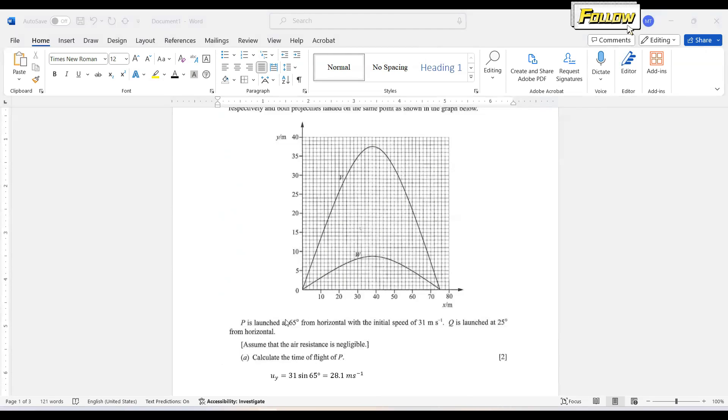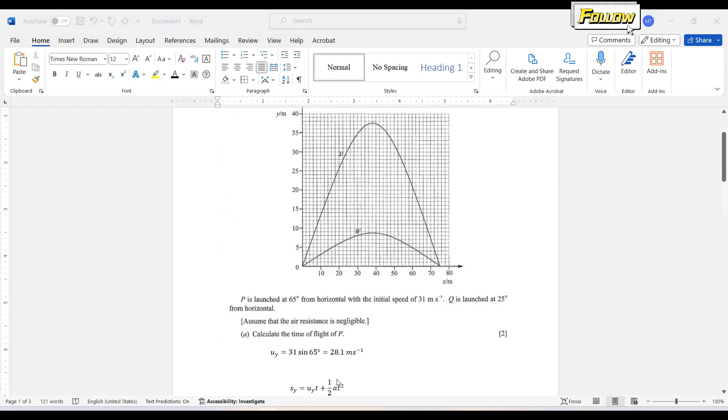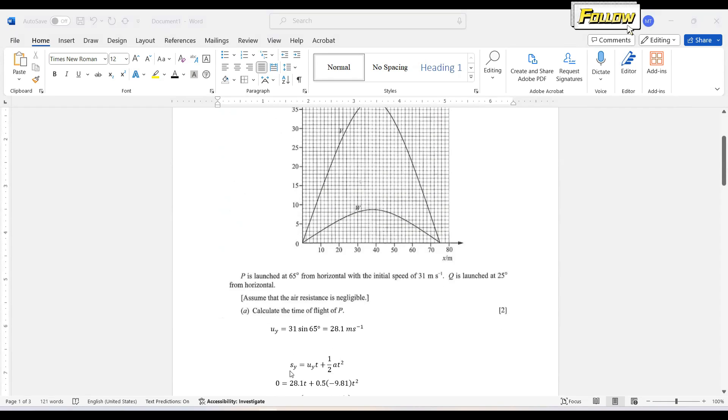So we have the initial speed, the angle and also information such as about the horizontal distance and also the height. So to get the time we can solve it in vertical component where we have the vertical velocity as 31 sin 65 equal to 28.1 meters per second. So here we can choose the formula of s equals ut plus half at squared.